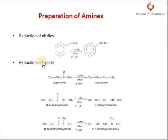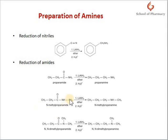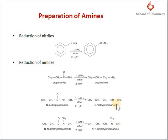Reduction of amides: amides on reduction with lithium aluminium hydride yield amines. An unsubstituted amide gives a primary amine. An N-substituted amide — where hydrogen is replaced by a methyl group — gives a secondary amine on reduction with lithium aluminium hydride. An N,N-disubstituted amide on reduction gives a tertiary amine. Because amides are easily prepared, this reduction method is the preferred method for making all classes of amines: primary, secondary, and tertiary.